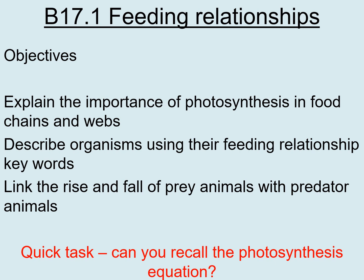Hello everyone, today we're going to be looking at B17.1, so we're starting chapter B17 and today's lesson is all about feeding relationships. Your objectives for today are to explain the importance of photosynthesis in food chains and food webs, describe organisms using their feeding relationship keywords, and link the rise and fall of prey animals with predator animals.